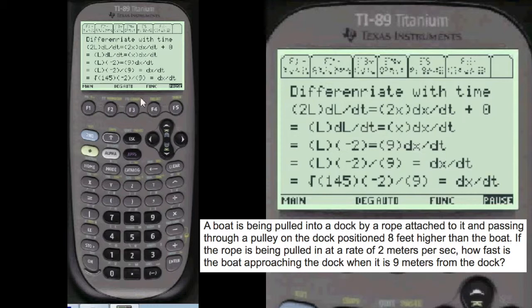And that's the answer, really. The answer is square root of 145 times minus 2 divided by 9, which is dx/dt, which is the change of rate of the x-axis as the boat is being pulled in at the dock.